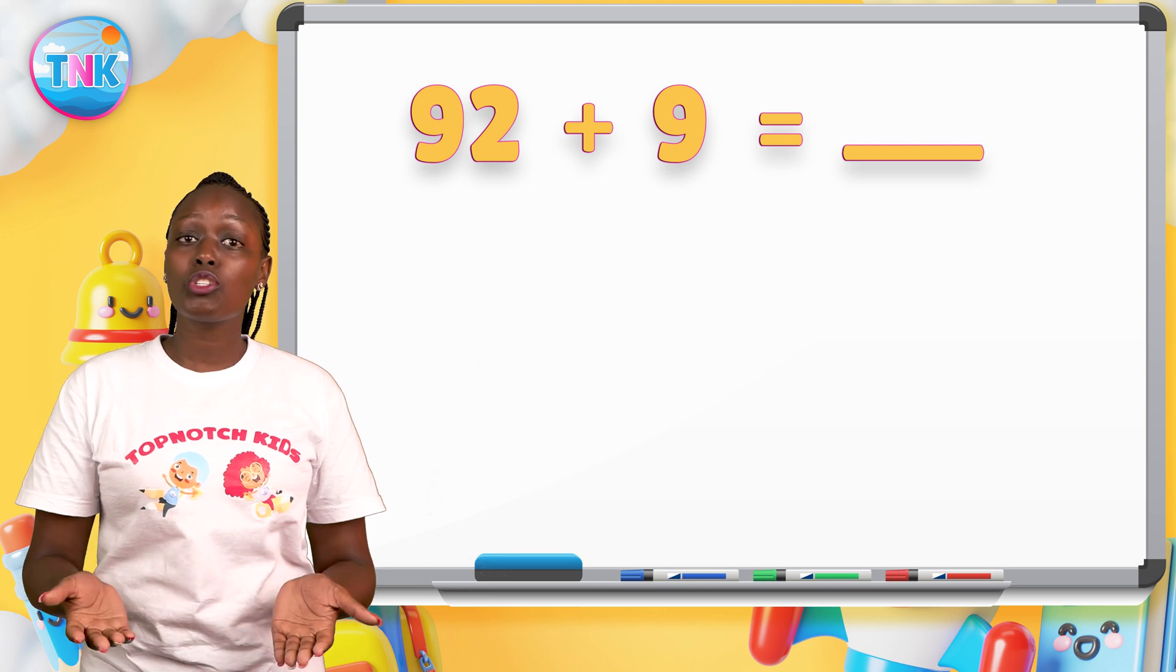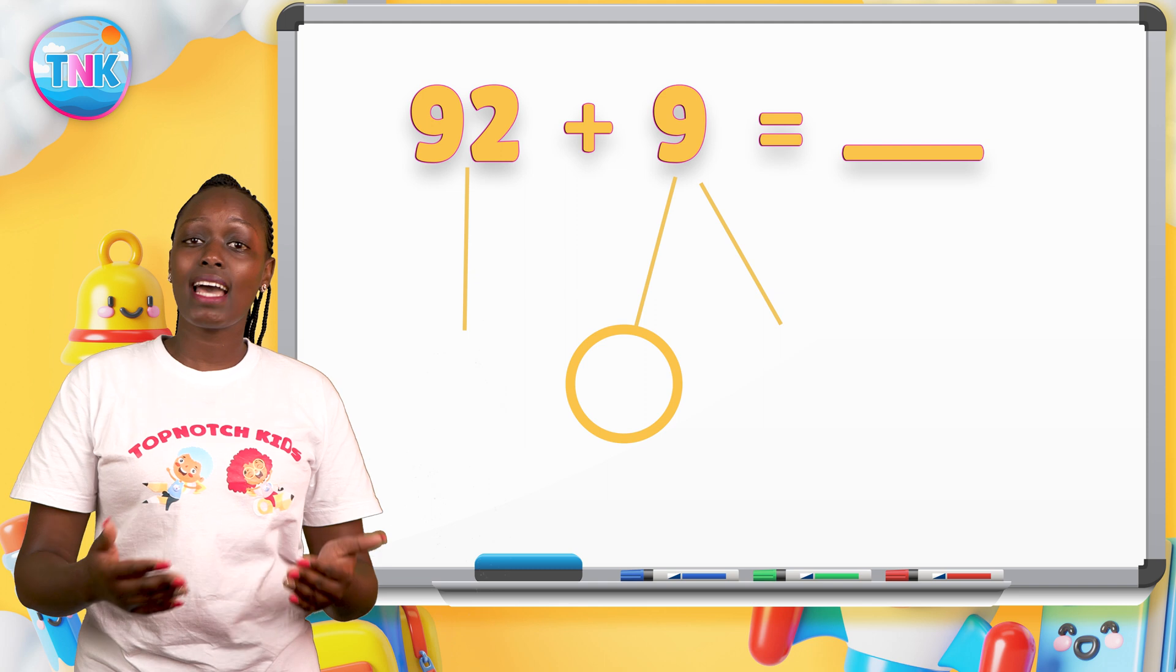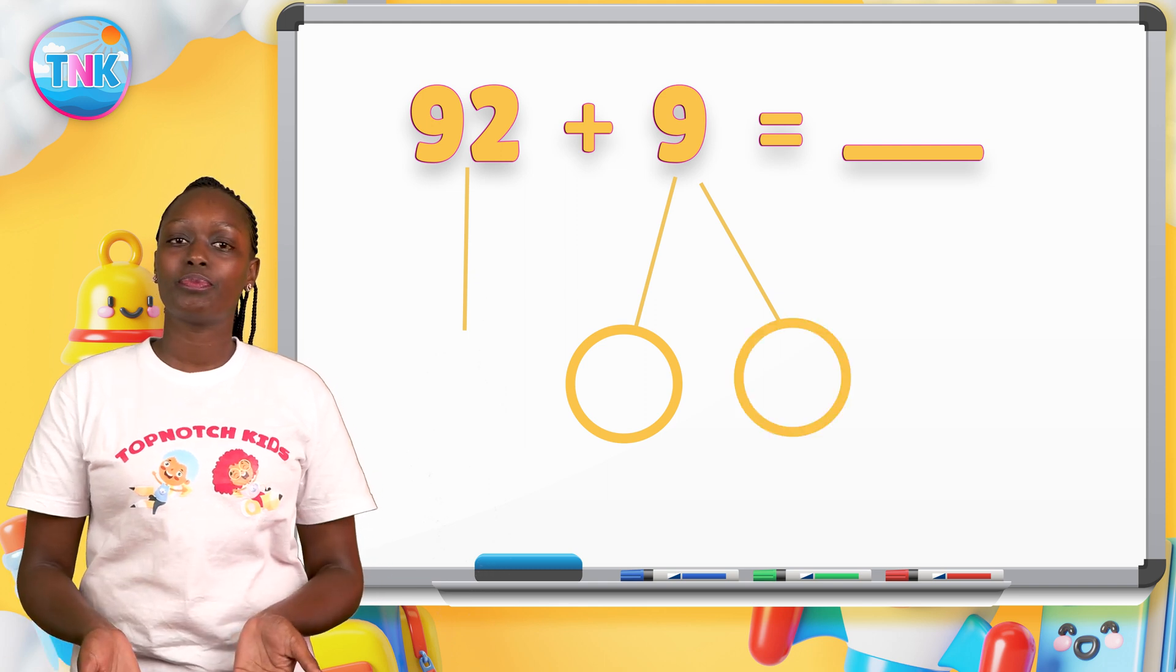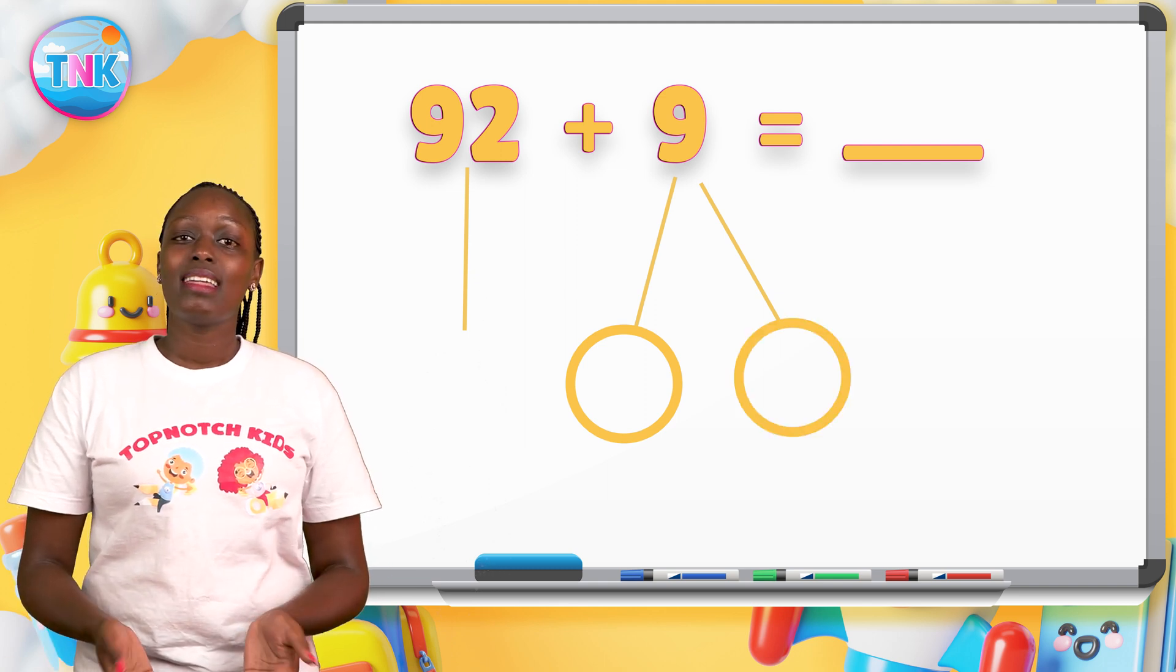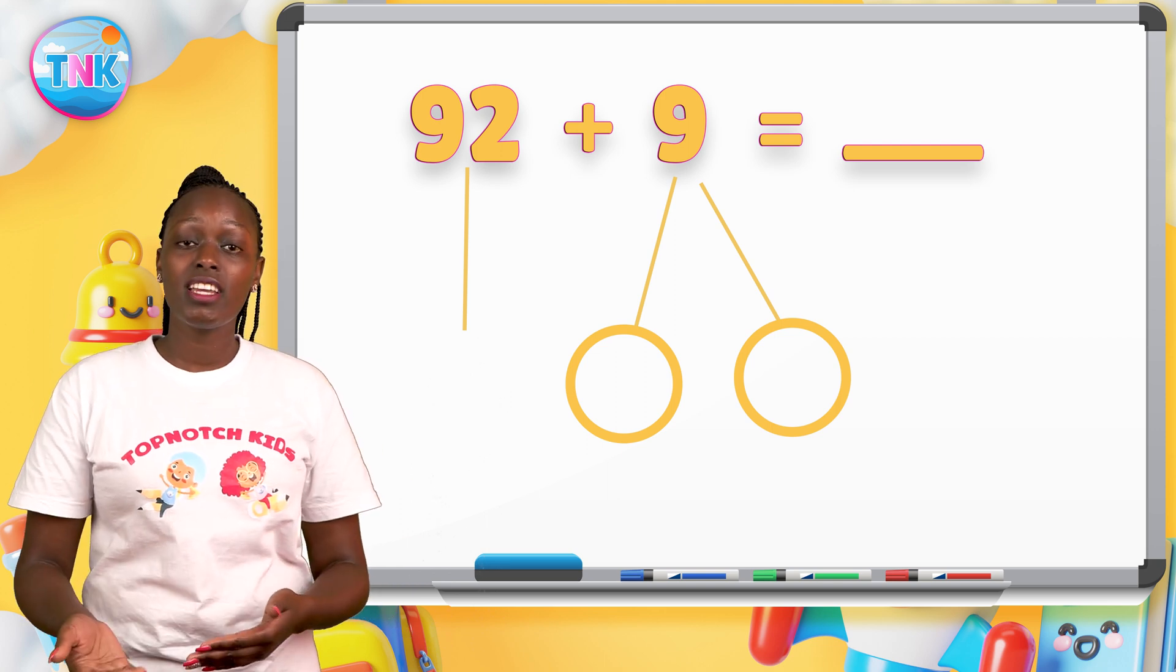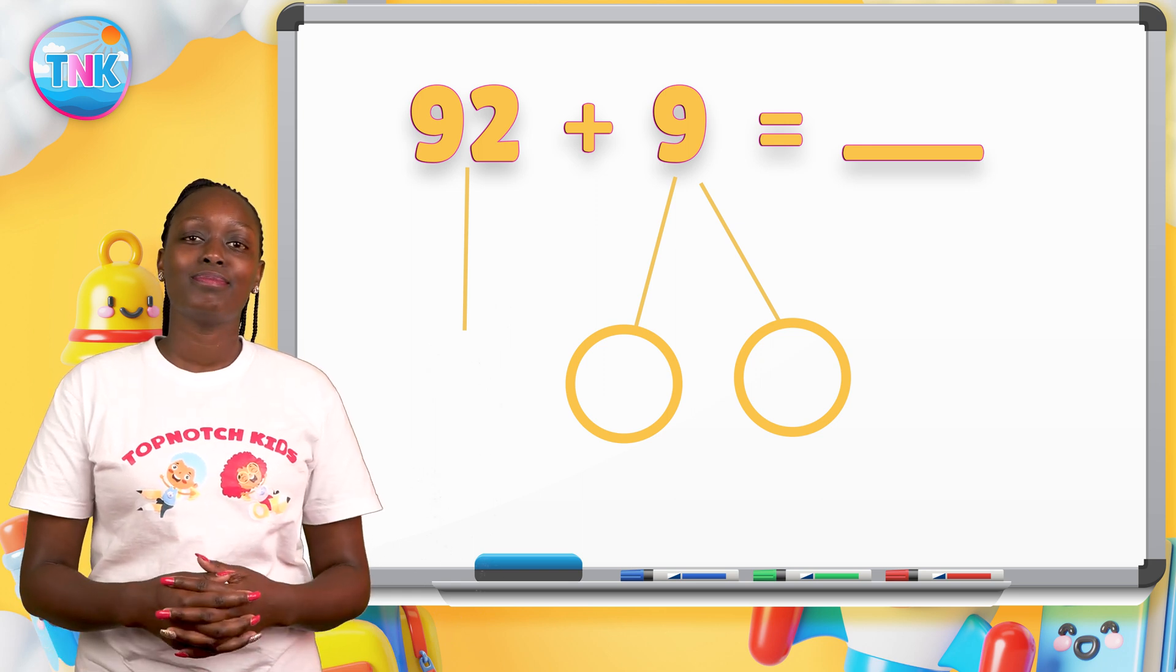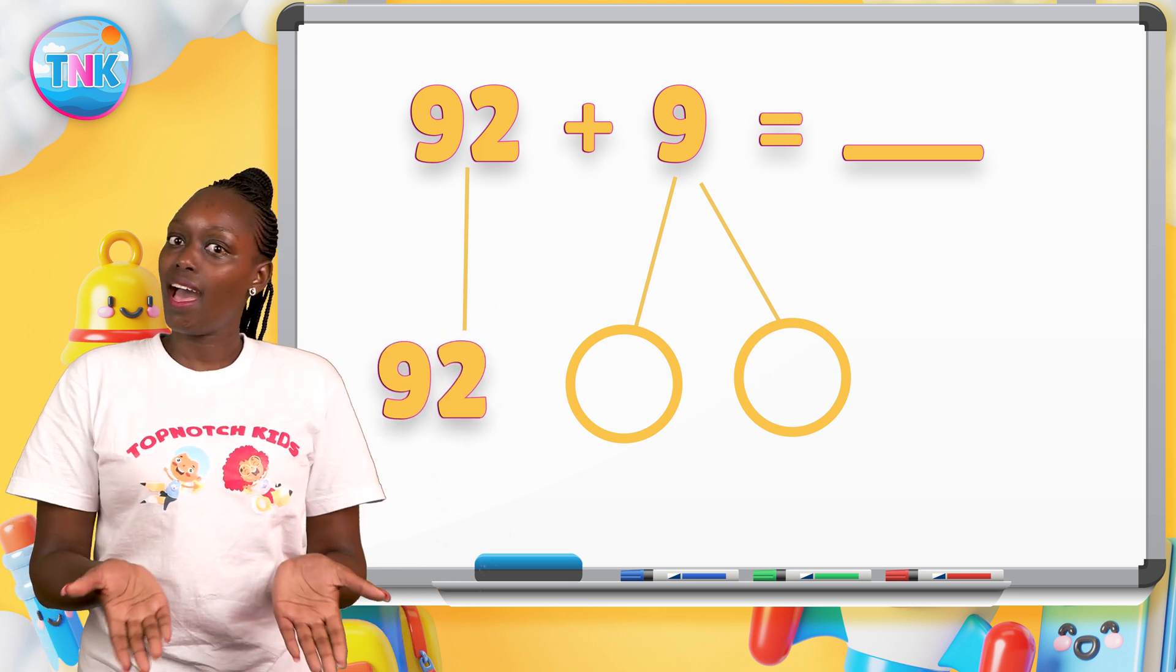You will draw two arrows from nine, then circle each arrow. Then identify the family of ten you will change ninety-two to. Super! It's a hundred.